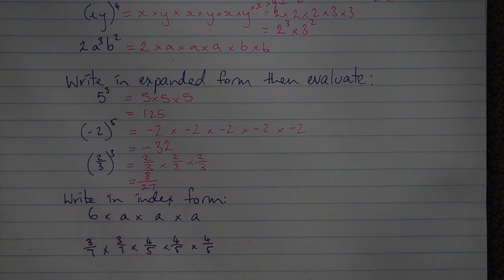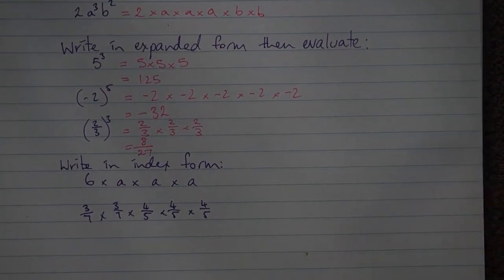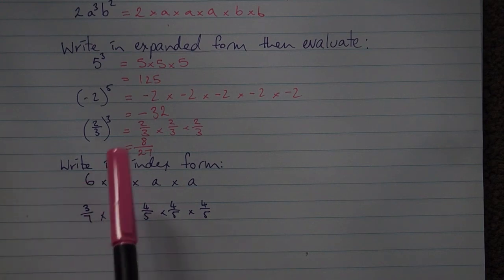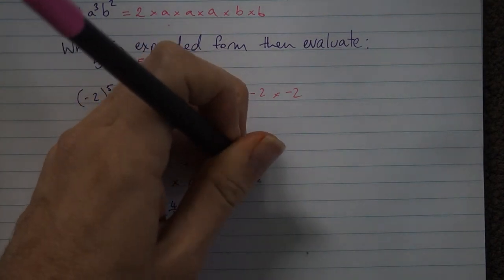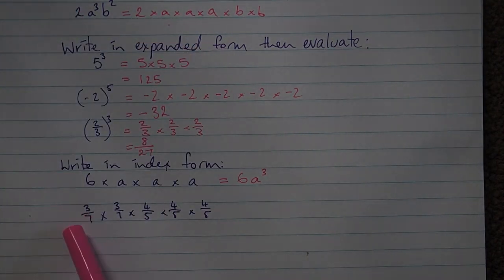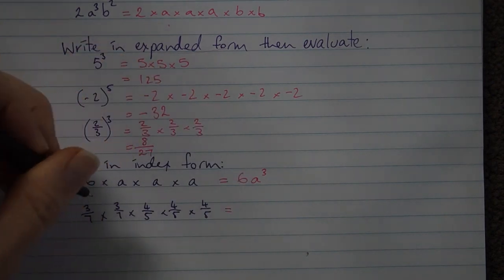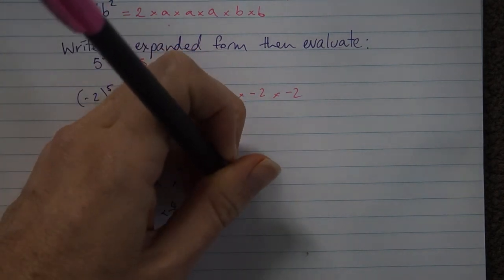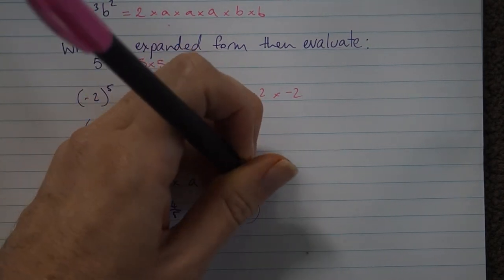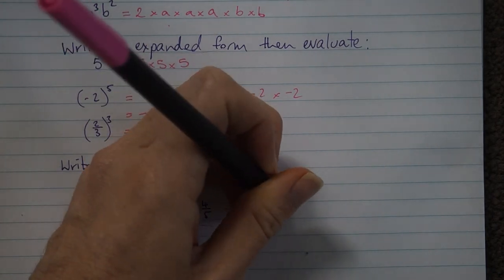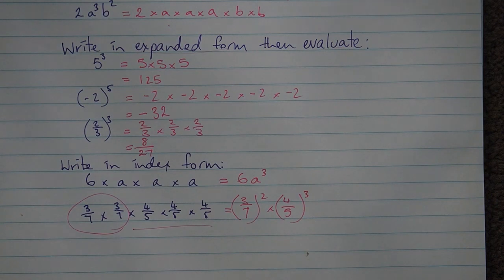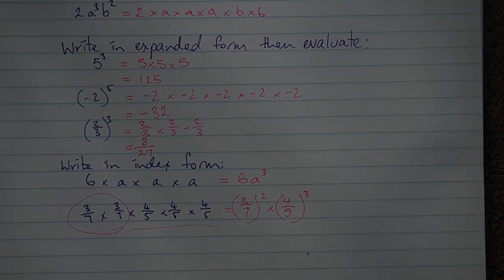Lastly, you may be asked to go from expanded form back to index form. For 6 times a times a times a: 6 is on its own with no power, and there are three a's, so it becomes 6a to the power of 3. For 3/7 times 3/7 times 4/5 times 4/5 times 4/5: there are two instances of 3/7, giving (3/7) squared, multiplied by three instances of 4/5, giving (4/5) to the power of 3.